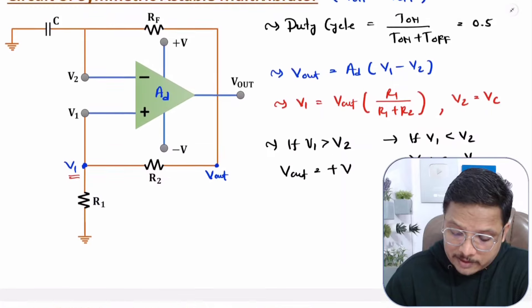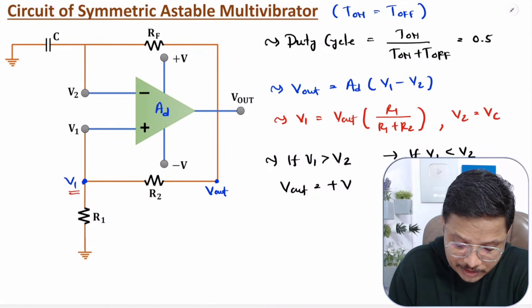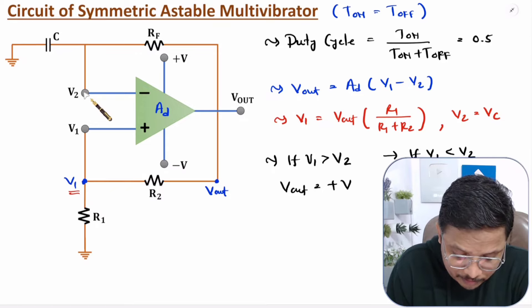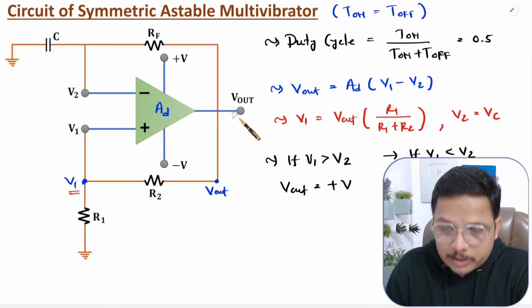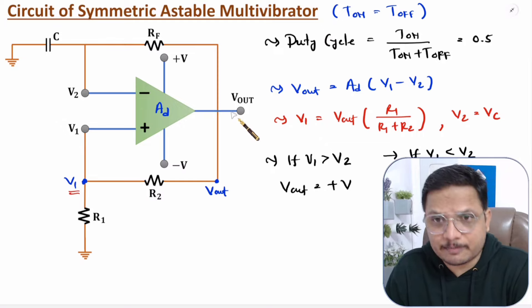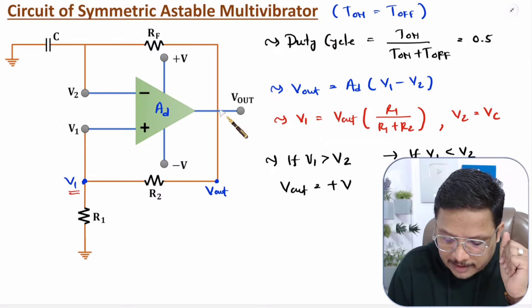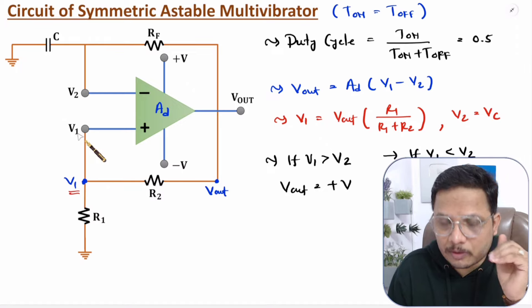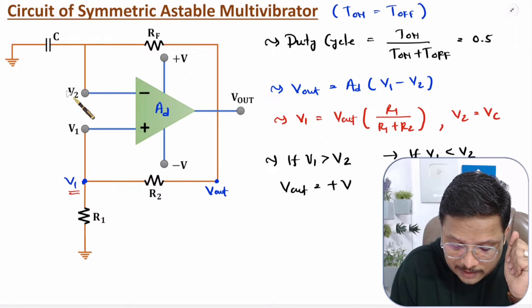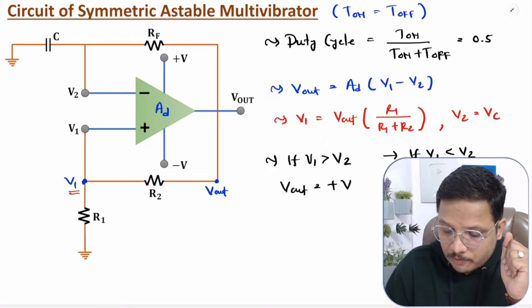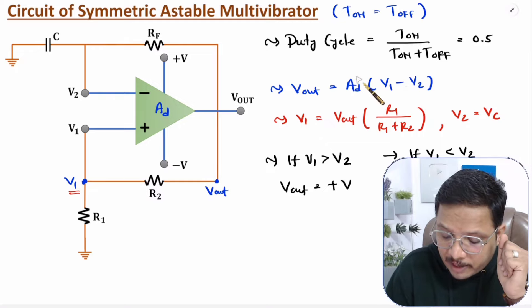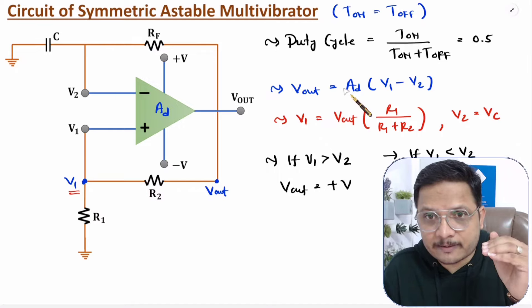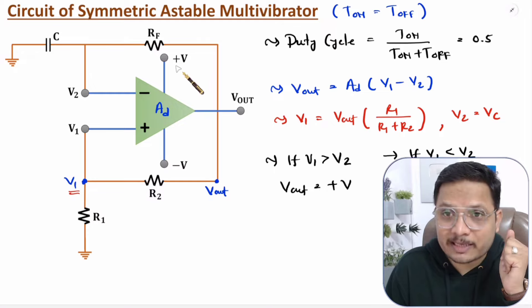Now let us understand how those possibilities occur. Initially, assume the capacitor is not charged, meaning V2 equals zero. At that time, output voltage is determined by the offset voltage. If some offset voltage exists, it feeds back and results in V-out equaling plus V saturated voltage. Since V2 is zero and V1 is some positive value, V1 minus V2 is positive and is amplified by differential gain A_D — which is on the order of 10^5 to 10^6 — giving a saturated output at V-plus.